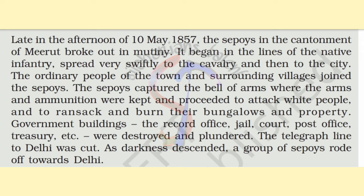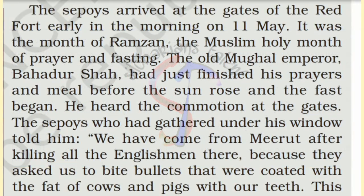They attacked white people and government buildings like the record office, jail, court, post offices, and treasuries. The telegraph line to Delhi was also cut. After which the sepoys arrived in Delhi, entering through the gates of the Red Fort on 11th May 1857. People also joined them.